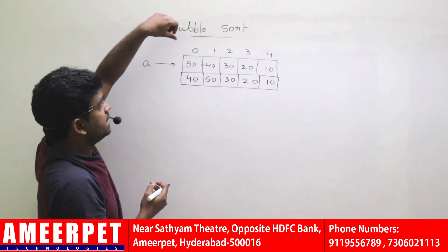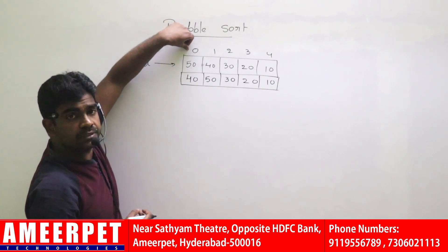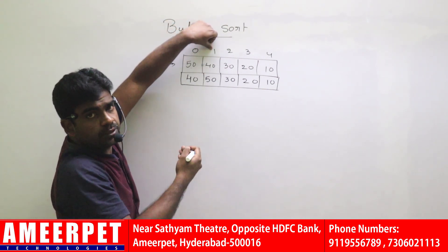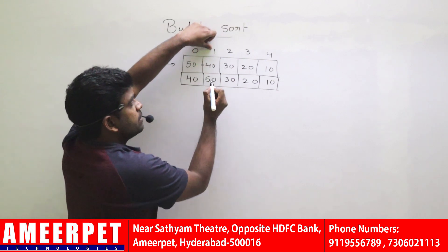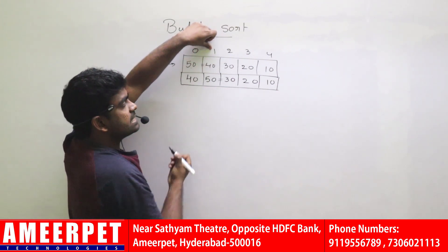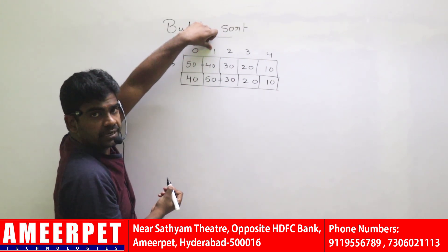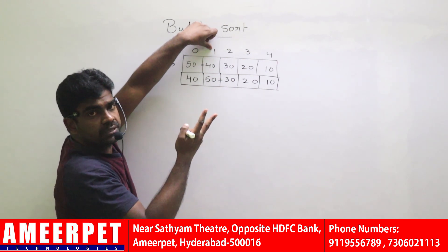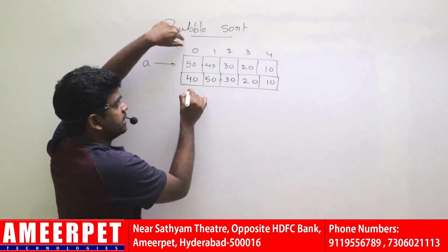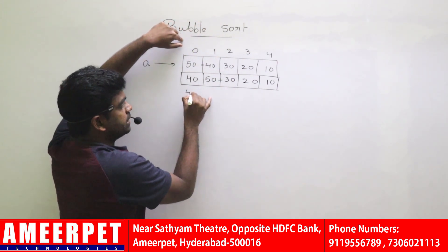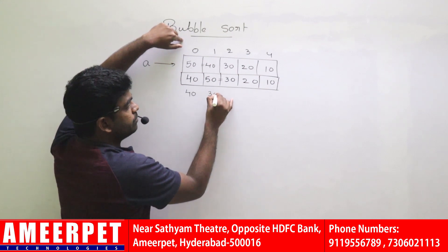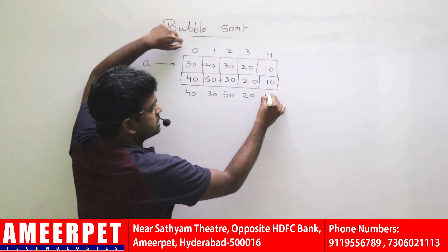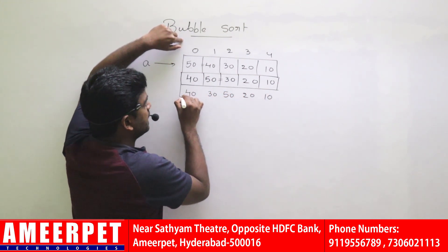Next, the first index element compares with the second index element: 50 and 30 compare, swapping them — they become 30 and 50. So the array is now 40, 30, 50, with remaining values 20 and 10.